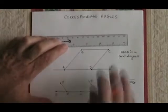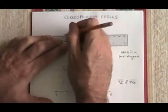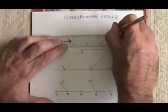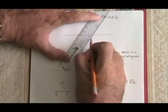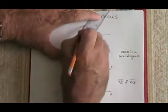Corresponding angles will happen whenever you have a situation like I'm about to draw. We have a straight line, and we have two other lines that cross it, but those two lines are parallel.